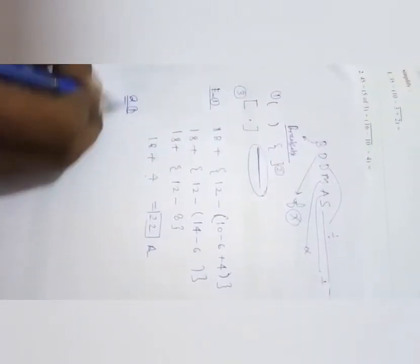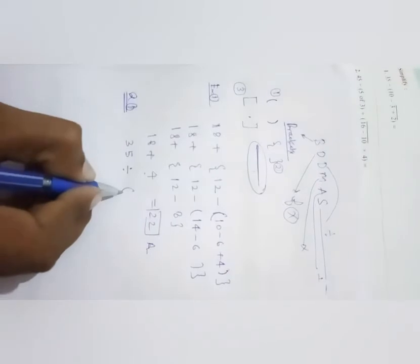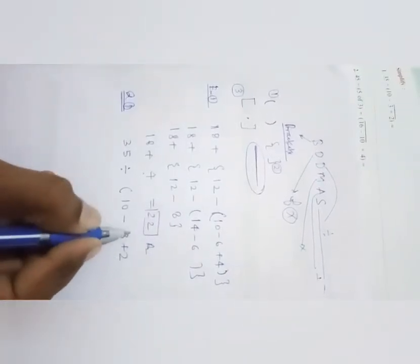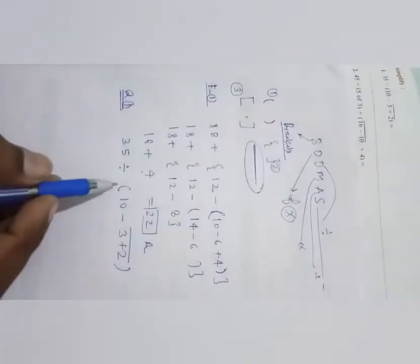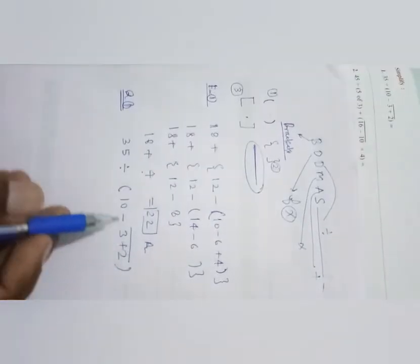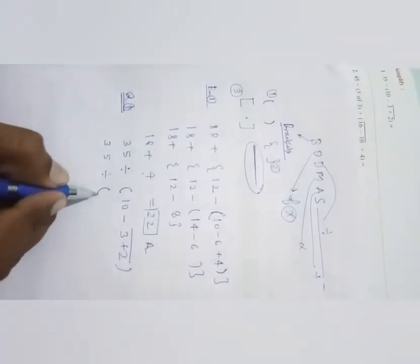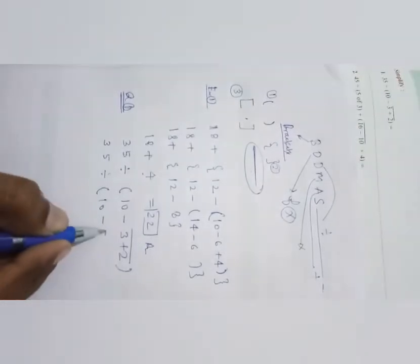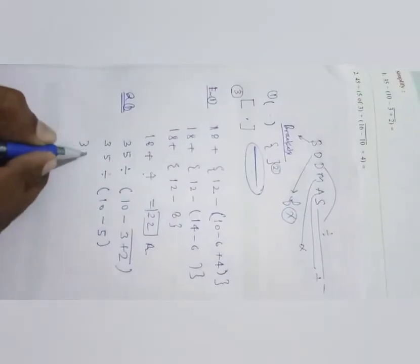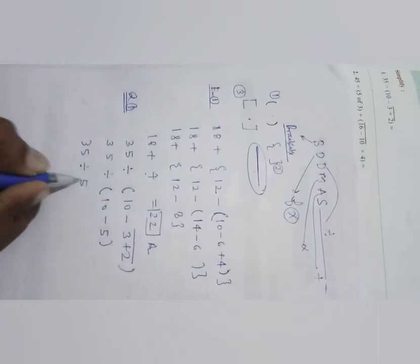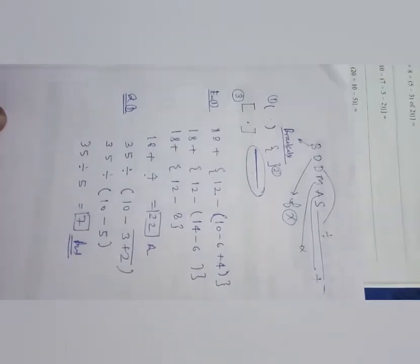Now I am going to solve question number one: simplify 35 ÷ (30 − 3+2̄), where 3+2 is under a vinculum sign. As explained, you solve the vinculum first: 3 + 2 = 5. So you get 35 ÷ (30 − 5) = 35 ÷ 5 = 7. So 7 is the answer.